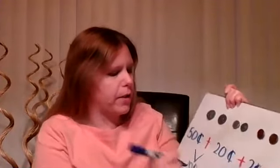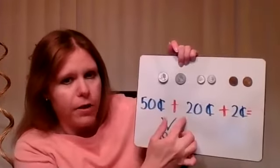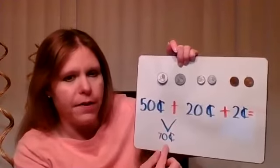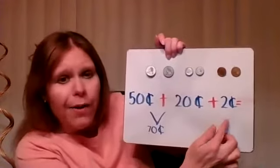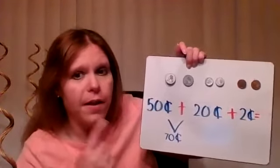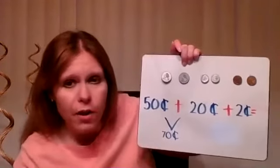Another easy way: we have five tens and two tens. Five plus two equals seven, so we have 70 cents. Now all we have to do is add on the two cents: 70, 71, 72. So easy — 70 plus two equals 72 cents. Don't forget your cent sign.